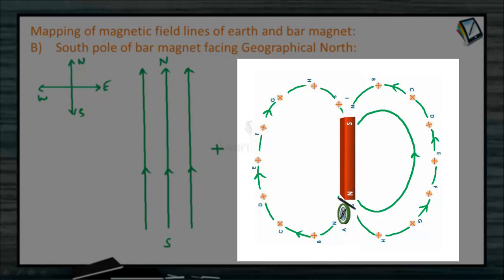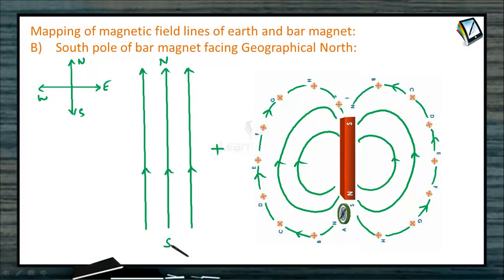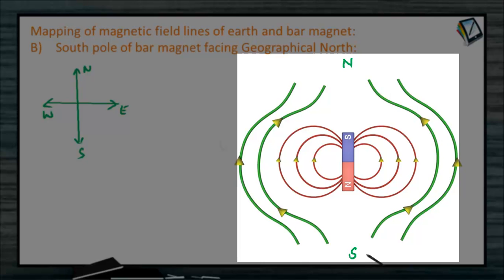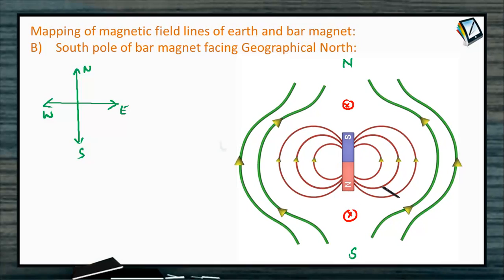The other lines extend similarly from north pole to south pole on both sides. Earth's magnetic field lines go from geographical south to north, while the bar magnet's lines go from north to south. When we combine these two — drawing the bar magnet in Earth's magnetic field — at a certain distance there will be a null point where the magnetic field of Earth and the magnetic field of the bar magnet cancel. This null point lies along the axis of the bar magnet.